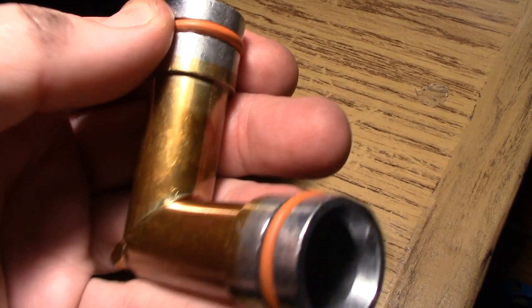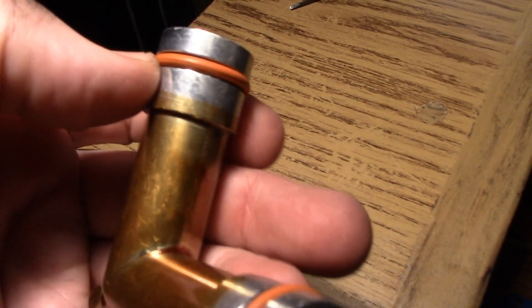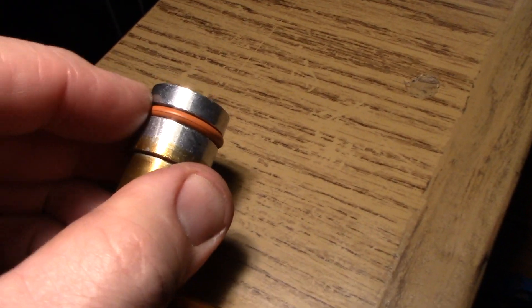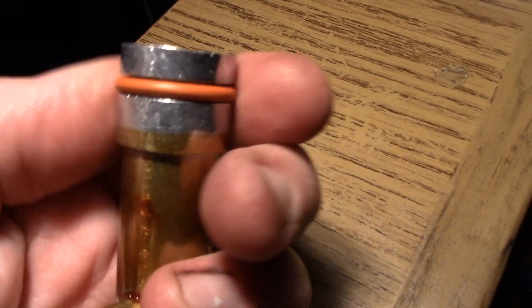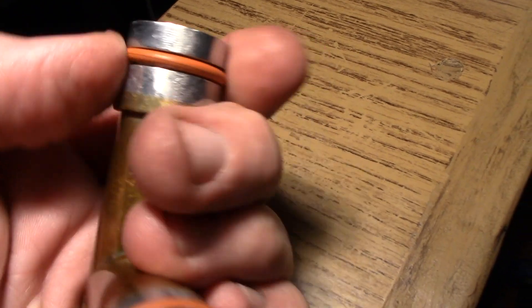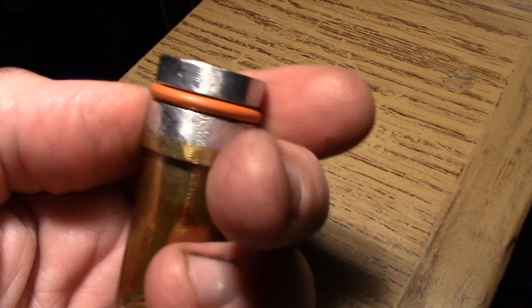But what you don't want to do is put a bunch in here, because what this thing is counting on is jamming up against this wall and flattening out to fill the void and make a tight seal. So you don't want anything blocking it from doing that.